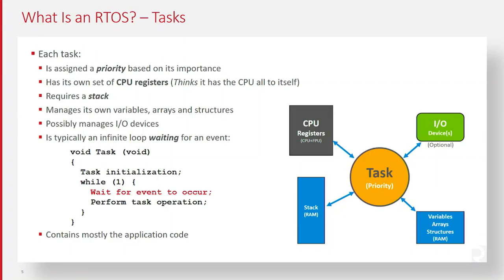A task, when it exists in your application, really has five aspects to it. First, a task has a priority, and you decide as the application developer what priority to give each task based on its importance. The task also has its own set of CPU registers. As far as the task is concerned, it thinks it owns the CPU — even though there are other tasks in the system — so it has all the integer registers, FPU registers, and so on.